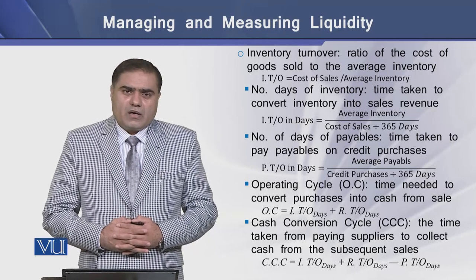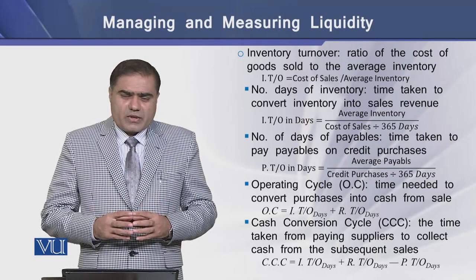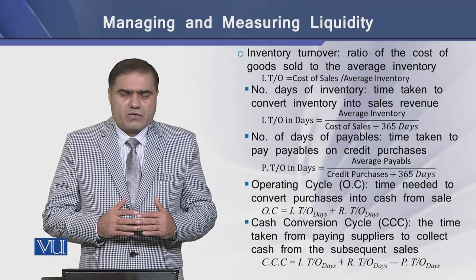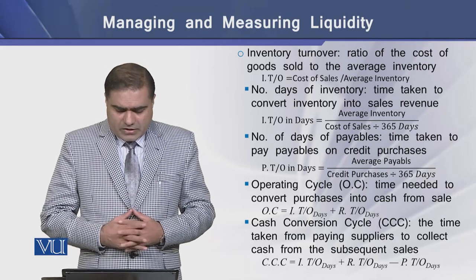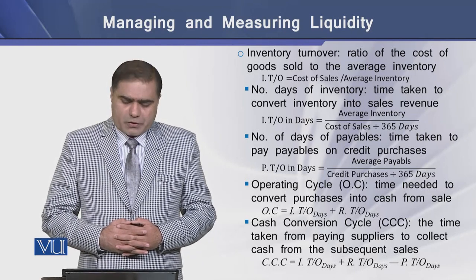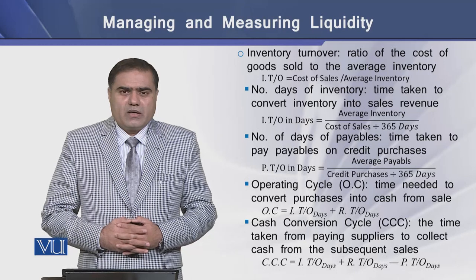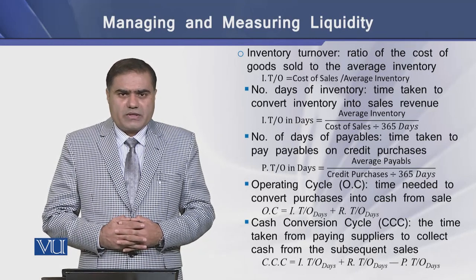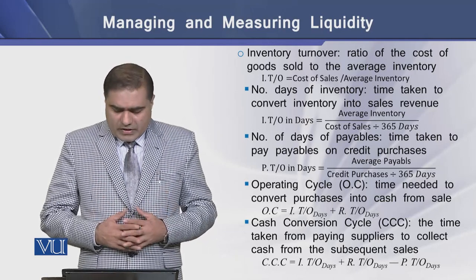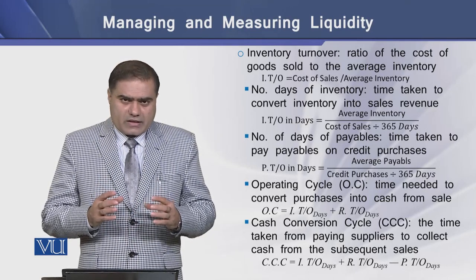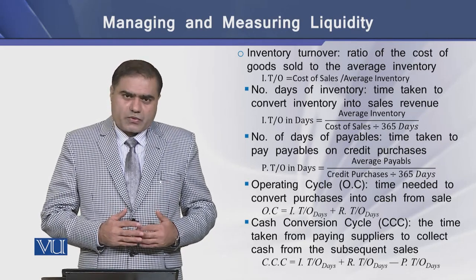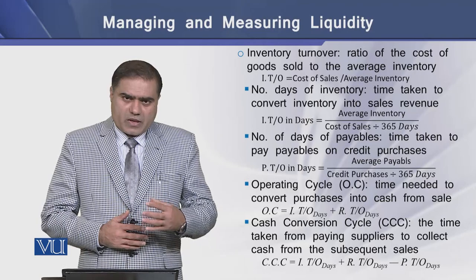The operating cycle tells the time needed by the firm to convert its purchases into cash collected from sales. The formula is the inventory turnover ratio plus the receivables turnover ratio. Next, the cash conversion cycle is the difference between the operating cycle and the average payment period. The cash conversion cycle tells the time taken from paying suppliers to collecting cash from the subsequent sales.